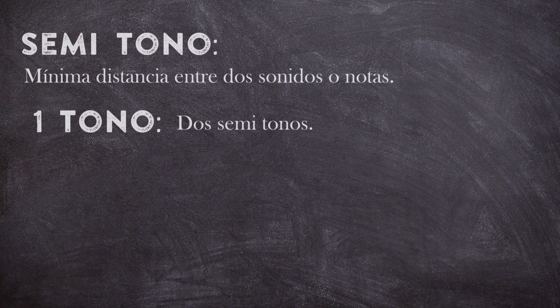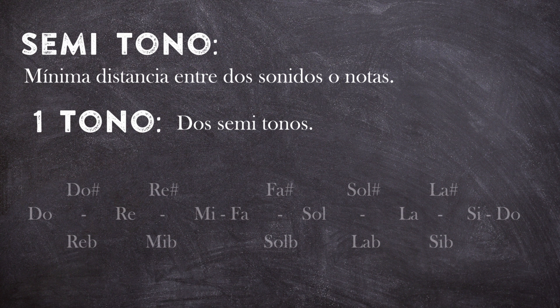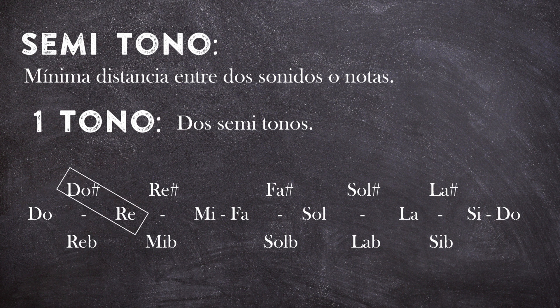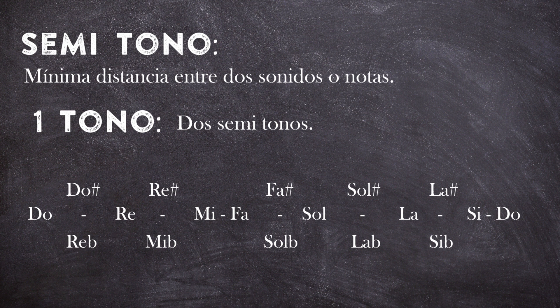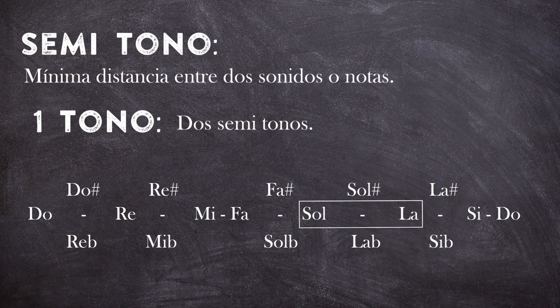Semitono es la mínima distancia que hay entre dos sonidos o notas, y un tono sería dos semitonos. Medio tono sería de do a do sostenido, de do sostenido a re, de mi a fa, o de sol a sol sostenido. Un tono sería, por ejemplo, de do a re, de do sostenido a re sostenido, de re bemol a mi bemol, de sol bemol a la bemol, de sol a la, de la a si, y así sucesivamente.